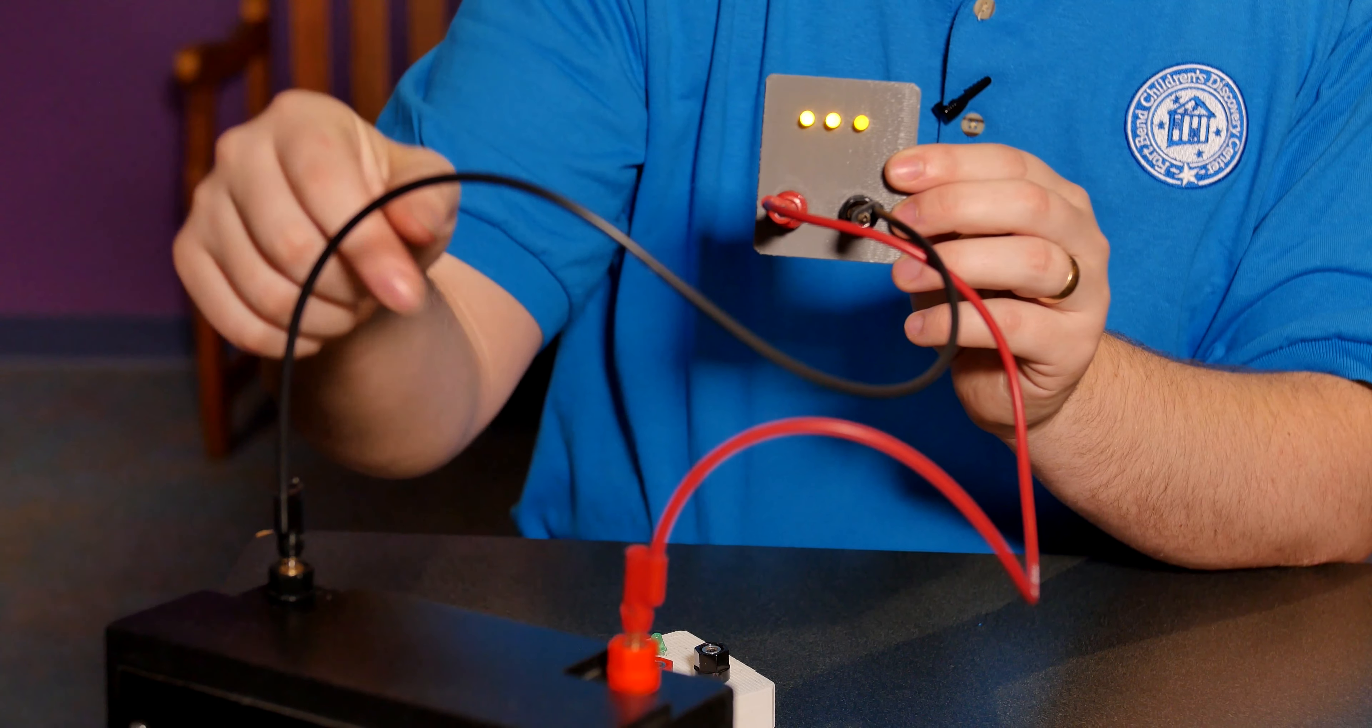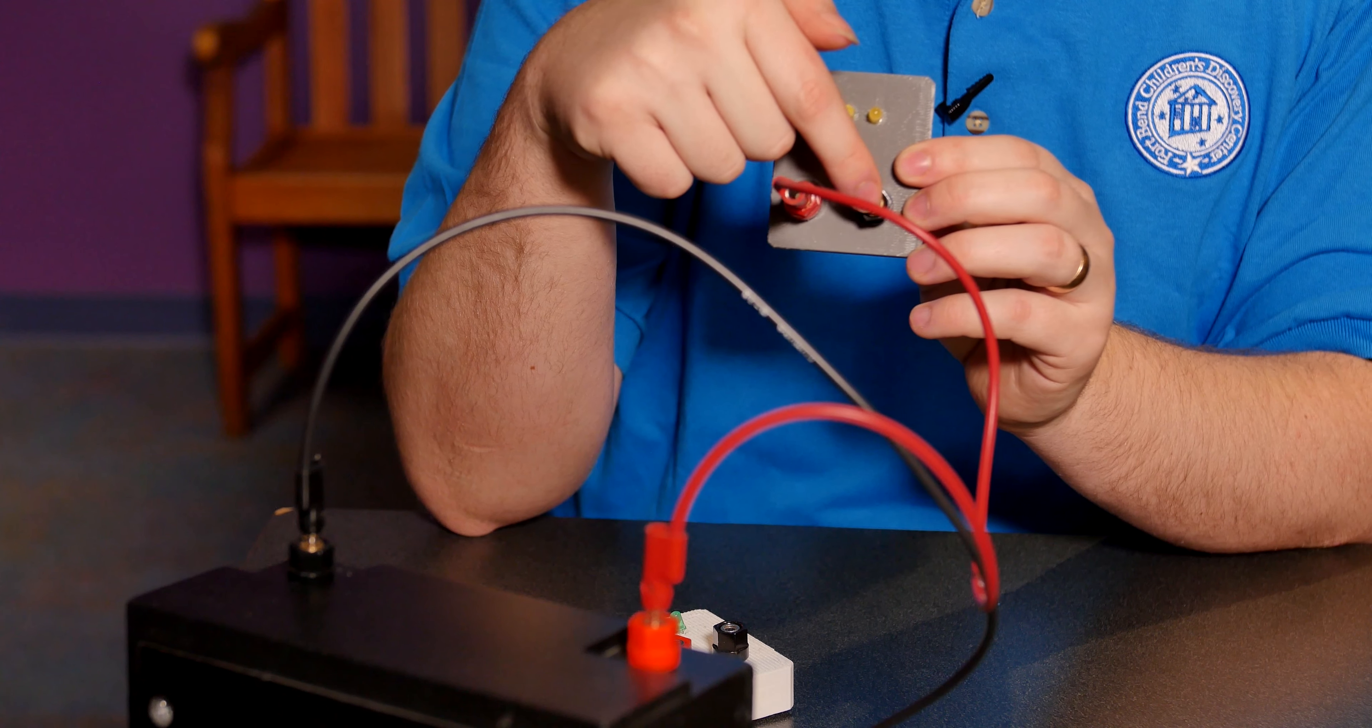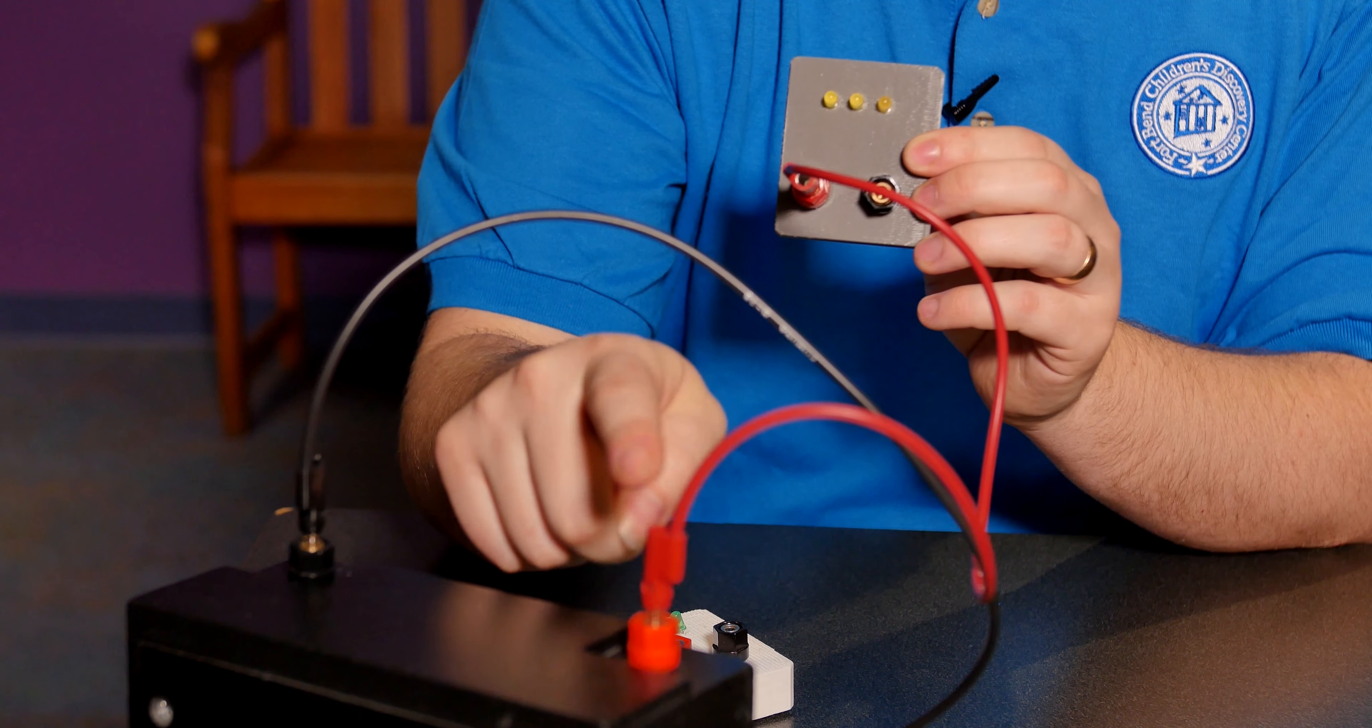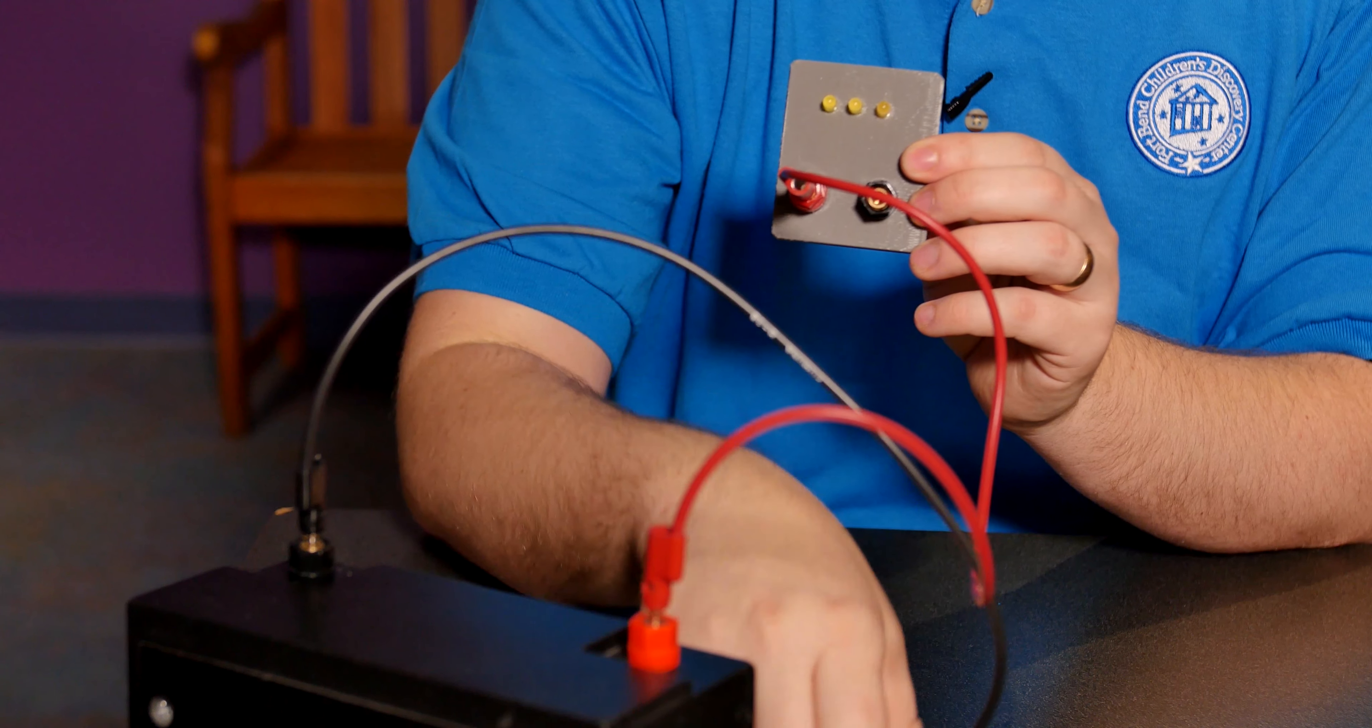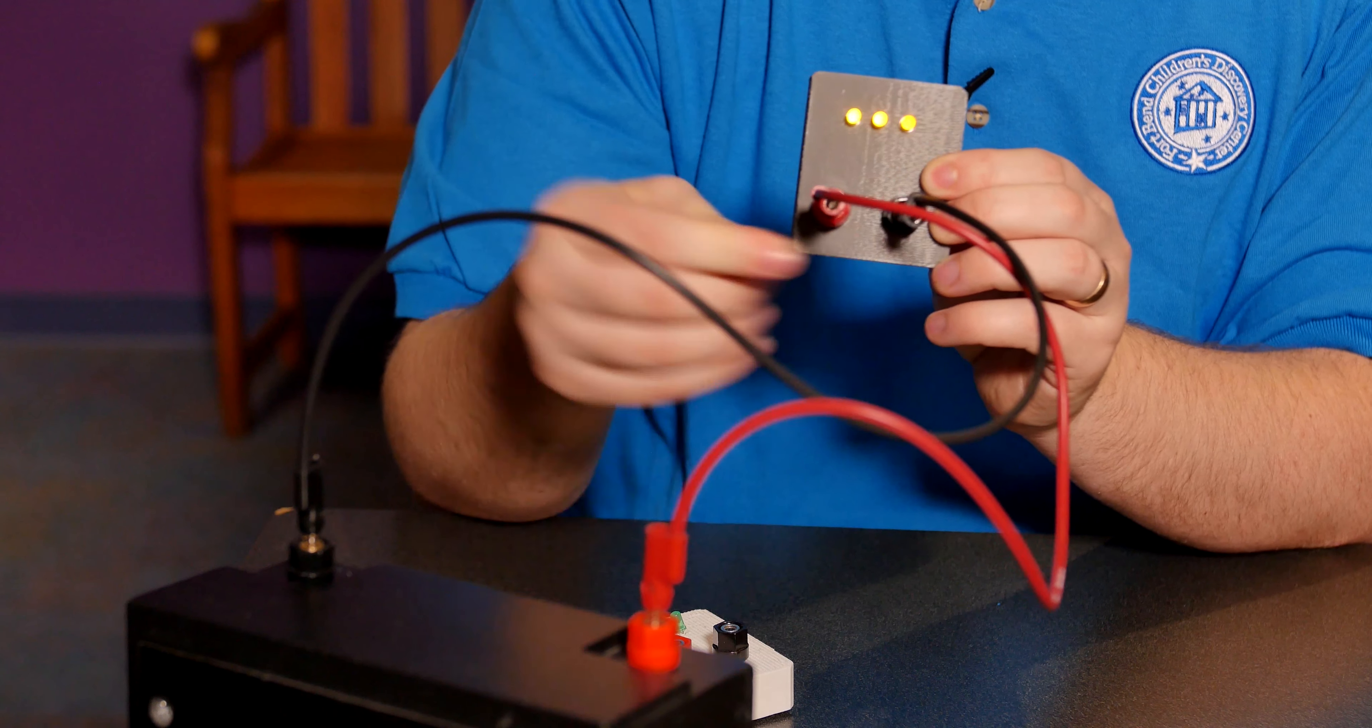If you break that circuit, the electrons no longer have anywhere to move. There's nowhere for them to go. So even though you have the positive force of the battery still technically pushing on those electrons, there's nowhere for them to go. There will be no current going through that circuit. You have to have a complete circle for the circuit to work.